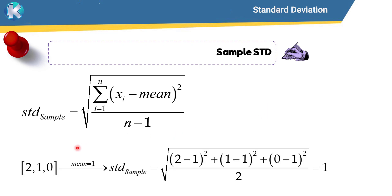Here is an example. Suppose our data is 2, 1, 0. The mean is 1. The sample standard deviation is calculated as: (2 minus 1) squared plus (1 minus 1) squared plus (0 minus 1) squared — that is, every data point minus the mean to the power of 2.